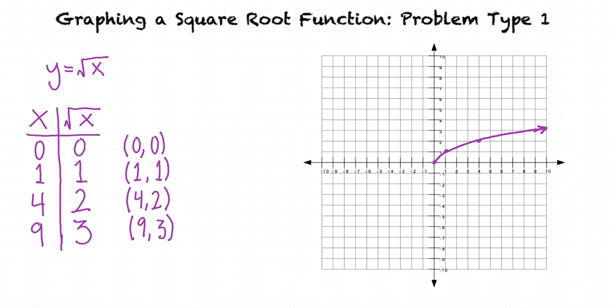How can we shift this graph vertically? If we add or subtract a number outside of the radical, that causes a vertical shift. For example, if we were given the function y equals the square root of x plus 2, the graph would look like our original graph, but shifted up 2 units. We can check this using our table.